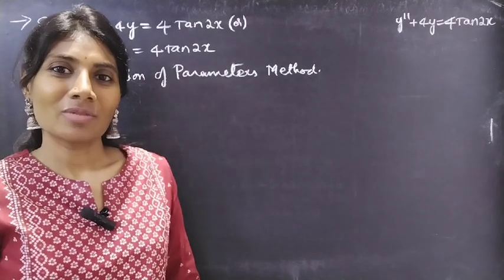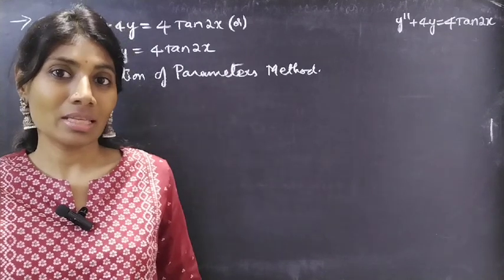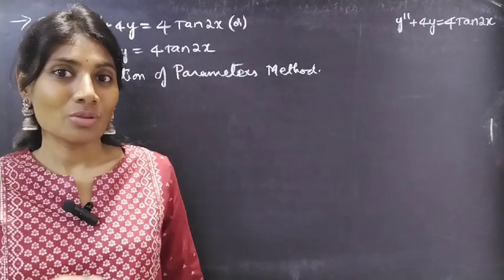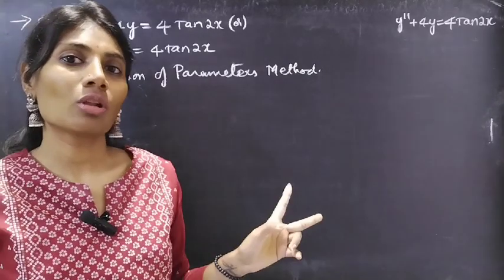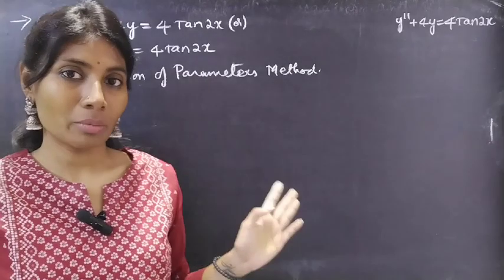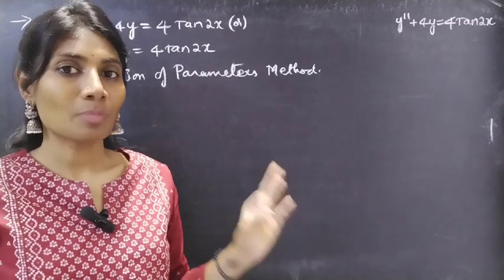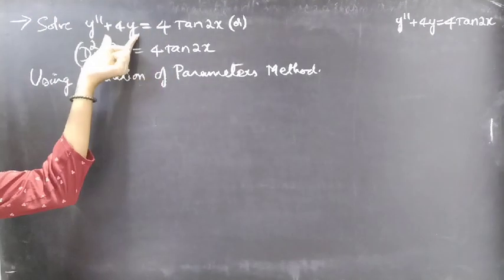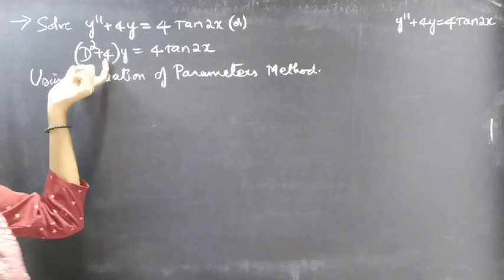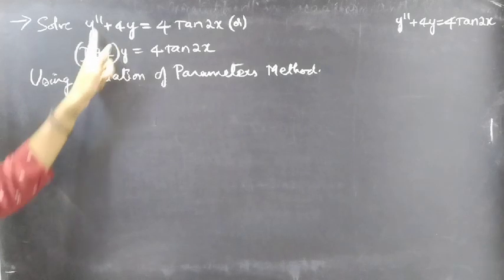Hello everyone, this is Rhea Kalpana. In this video we are going to solve a differential equation using variation of parameters — part 3. We have already seen two ways of solving the same equation using the variation of parameters method in part 1 and part 2. The problem is: solve y'' + 4y = 4 tan(2x), or (D² + 4)y = 4 tan(2x), using the variation of parameters method. This is a second-order differential equation.